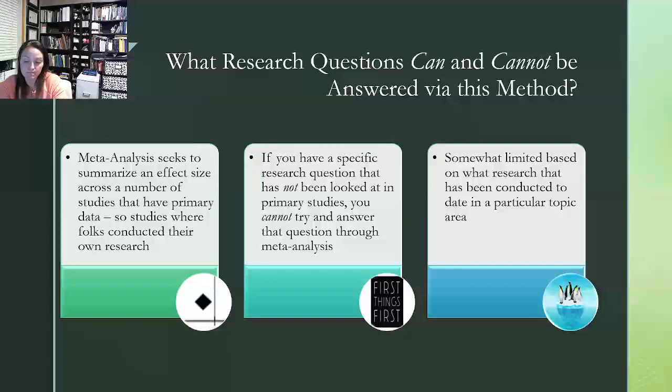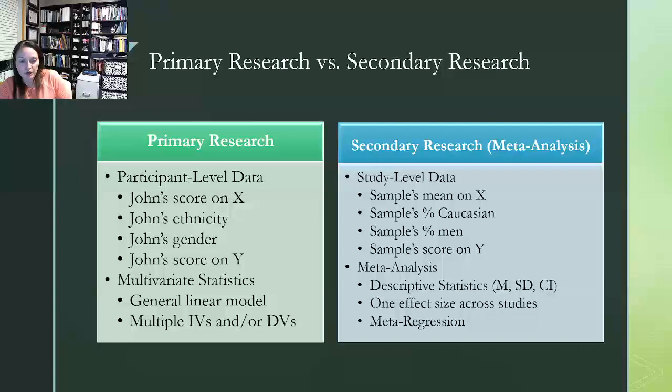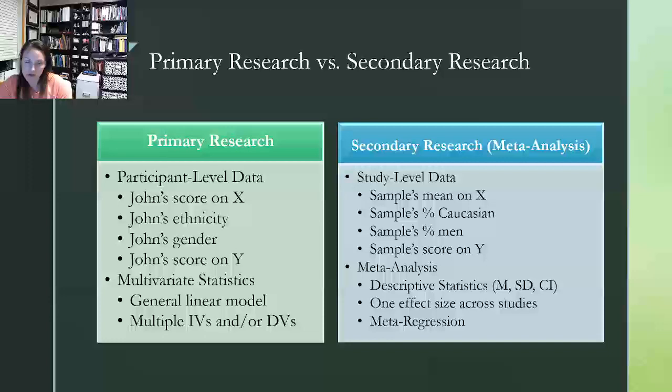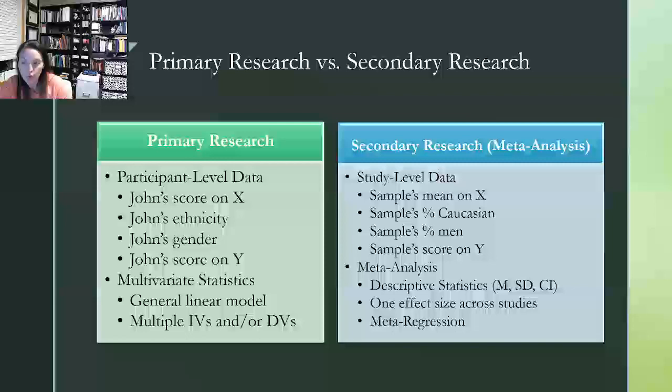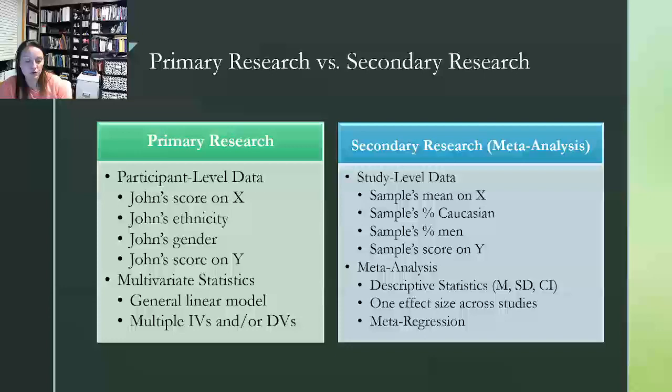So let's look at the issue of primary versus secondary research a little bit closer to ensure that we understand the difference between the two. So primary research, we are looking at an individual study that someone conducted. So it's going to include participant level data. So an individual score, a group's score, things like that. And it's going to include statistics that are typically multivariate. So we're going to see multiple independent and dependent variables, general linear model type things.